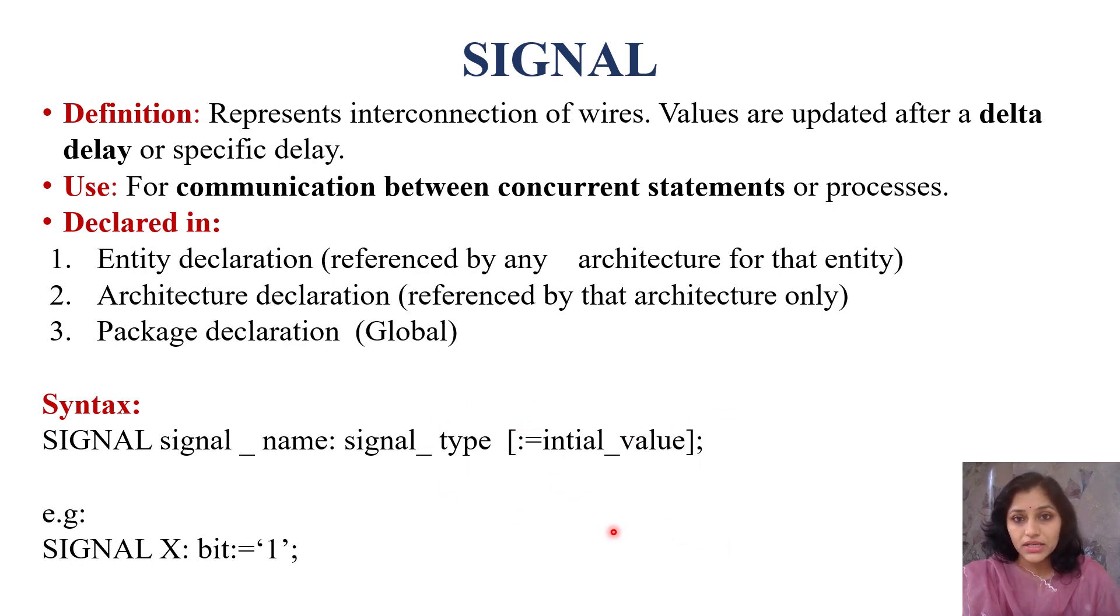Then data type and then initial value. The thing written in square bracket is not compulsory. If you want to assign some initial value, then you can assign initial value by using colon and equals to. This is example: signal, signal name is x, data type of my x is bit and initial value is 1. After simulation, this value can change to 0 or it can remain 1. This is about signal.